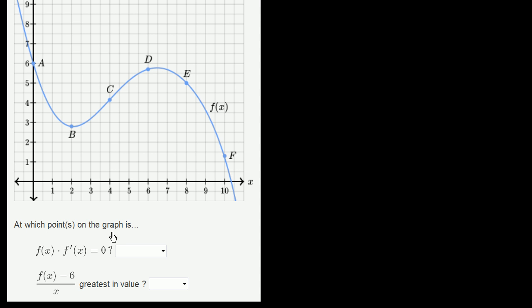We're asked, at which points on the graph is f(x) times f'(x) equal to 0? If I have the product of two things and it's equal to 0, that tells us that at least one of these two things need to be equal to 0. So first of all, let's see, are there any points when f(x) is equal to 0?